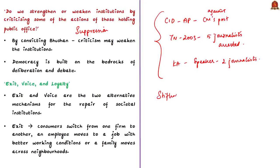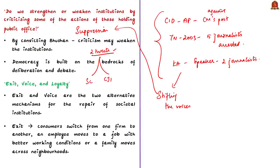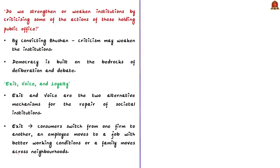The cost or consequence of such suppression of criticism is the context of today's news column. As we saw during our first news article, senior lawyer Mr. Prashant Bhushan shared two tweets perceived to be against the Supreme Court and the Chief Justice of India. Suo motu contempt of court proceedings were charged against Mr. Prashant Bhushan and he was recently convicted. In this case, while adjudicating, the Supreme Court took a position on an important ethical question: do we strengthen or weaken institutions by criticizing some of the actions of those holding public office? The Supreme Court was of the opinion that criticism may weaken the institutions.